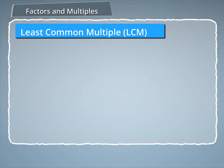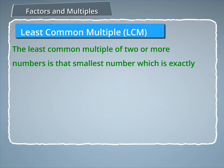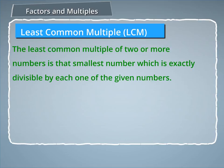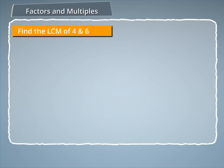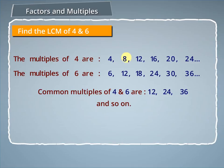Now let us discuss Least Common Multiple, or LCM. The LCM of two or more numbers is the smallest number exactly divisible by each of the given numbers. To find the LCM of 4 and 6, we list their multiples: multiples of 4 are 4, 8, 12, 16, 20, 24, and so on; multiples of 6 are 6, 12, 18, 24, 30, 36, and so on. The common multiples are 12, 24, 36, and so on. The least of these is 12, so the LCM of 4 and 6 is 12.